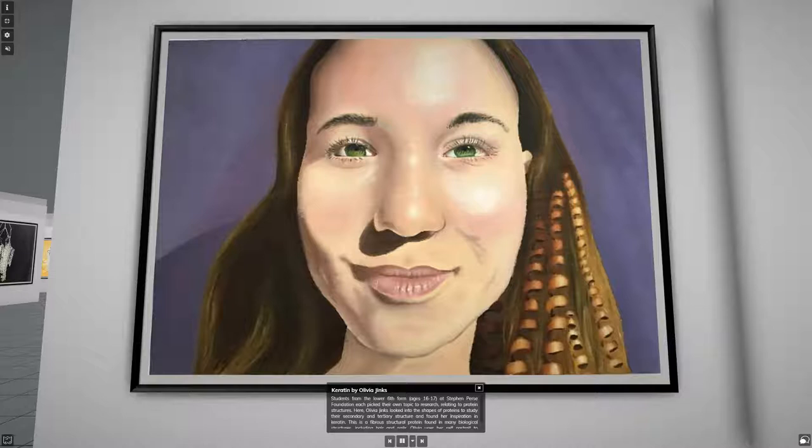Students from the lower sixth form at Stephen Peirce Foundation each picked their own topic to research, relating to protein structures. Here, Olivia Jinx looked into the shapes of proteins to study their secondary and tertiary structure and found inspiration in keratin. This is a fibrous structural protein found in many biological structures, including hair and nails. Olivia uses her portrait to represent the structures of keratin as part of her hair.